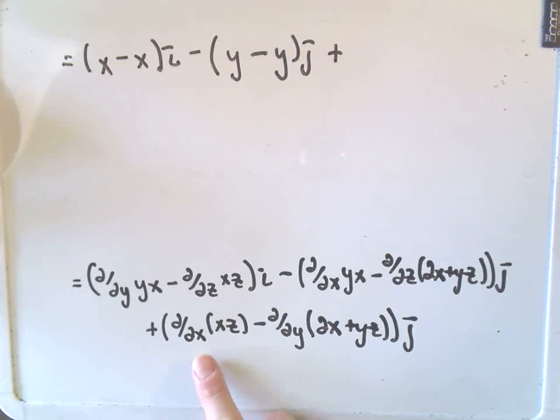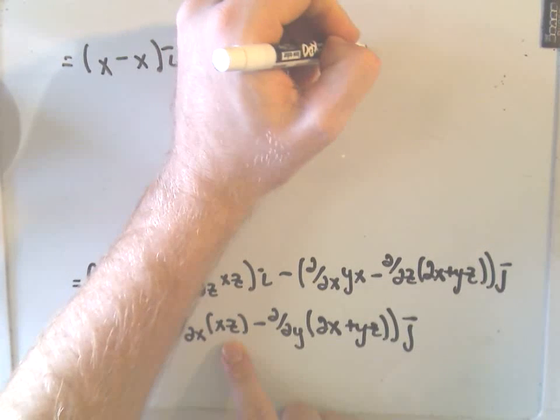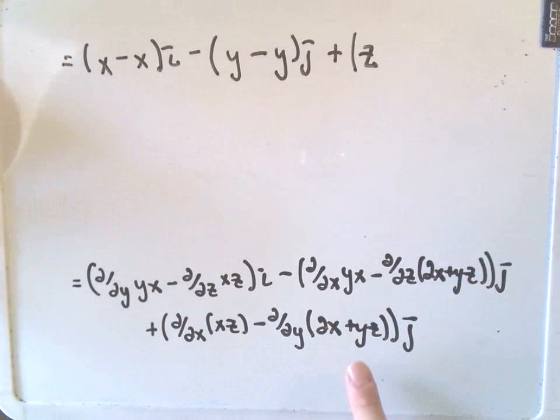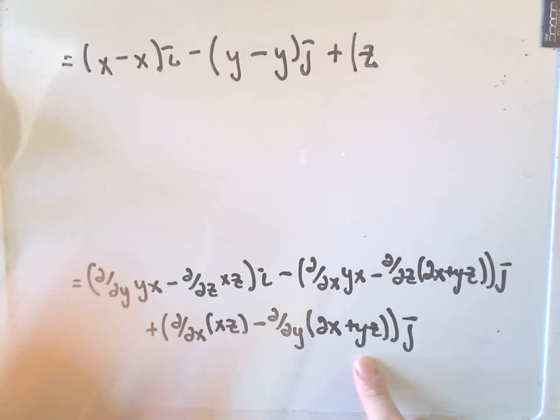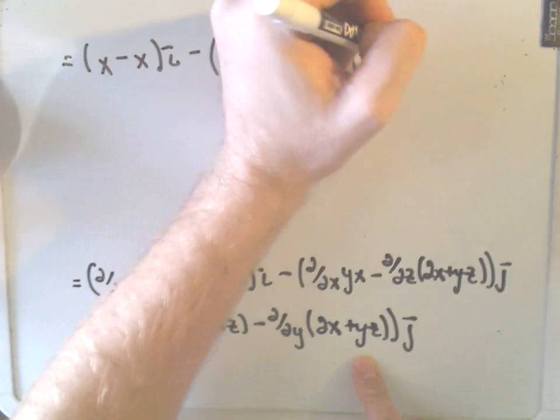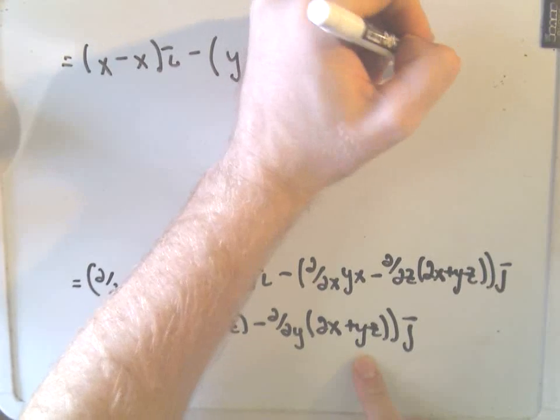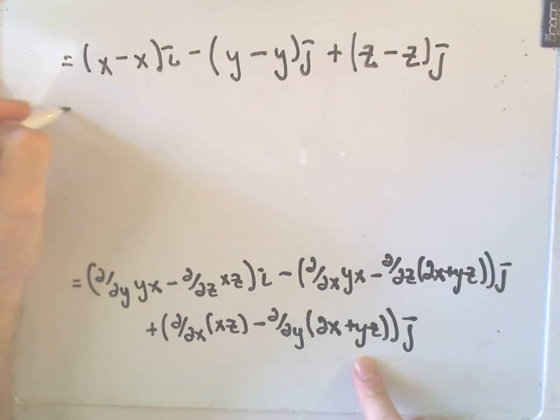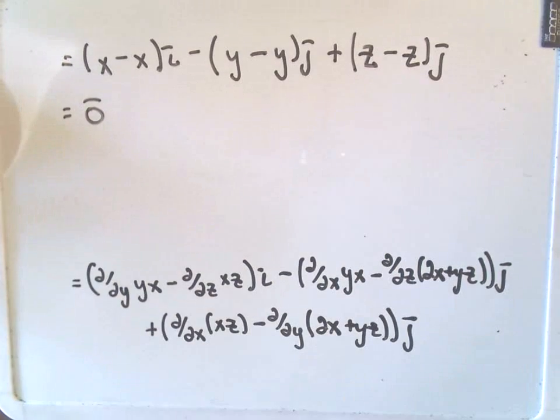And then, last but not least, if we take the partial with respect to x of xz, that's just going to leave us with z. And then, if we take the partial with respect to y of the 2x plus yz, that's going to leave us with just a z as well. So, in fact, it does look like everything cancels out. We just get 0.